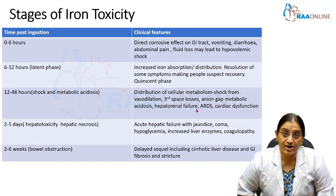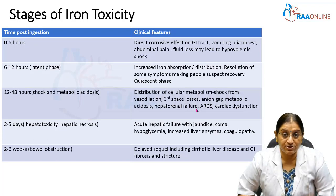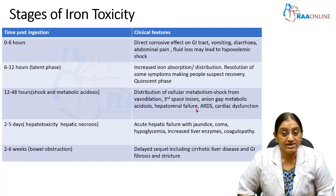Now let's see the stages of iron toxicity. We've seen how iron acts at toxic levels; now let's look at the stages. Initially, at 0 to 6 hours, the iron is in the intestine, causing a direct corrosive effect on the GI tract, presenting as vomiting, diarrhea, and abdominal pain.